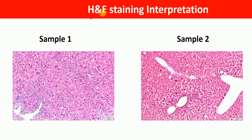To analyze H&E staining results, here we have two pictures: picture one for sample one and picture two for sample two. Comparing the two, in sample one we see more nuclei, indicating more infiltration of cells, whereas in sample two we see fewer nuclei, indicating less cell infiltration. So we can conclude that more cells have infiltrated in sample one compared to sample two.